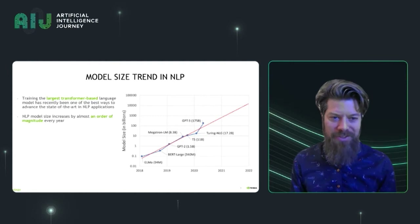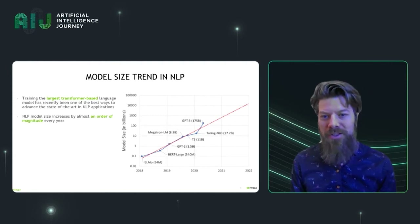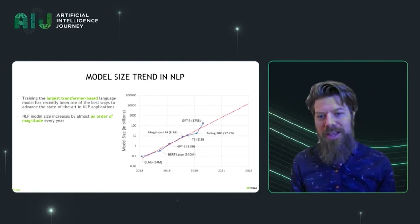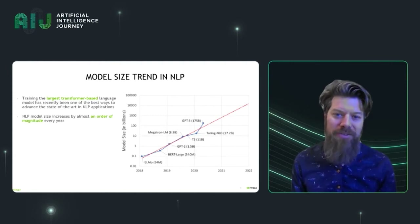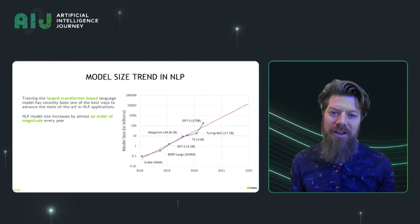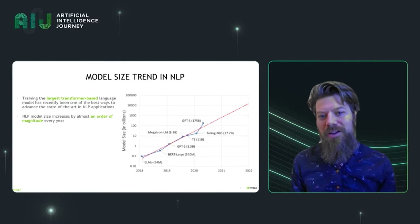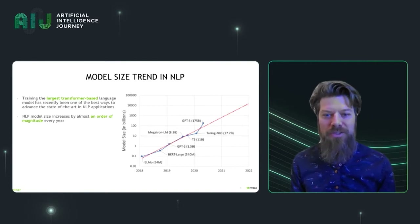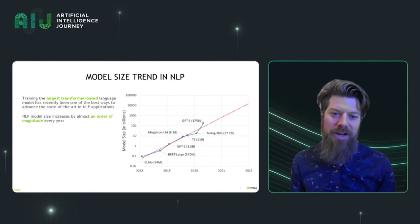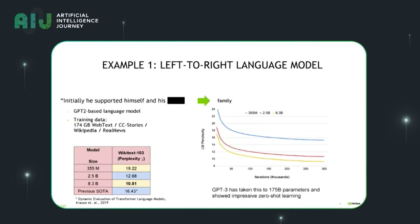Recently, there was the GPT-3 model that came out from OpenAI at 175 billion parameters. It's enormously compute-intensive to train this model, but the applications of these models are really great. So I'm going to talk about a few ways of using these language models to solve problems.